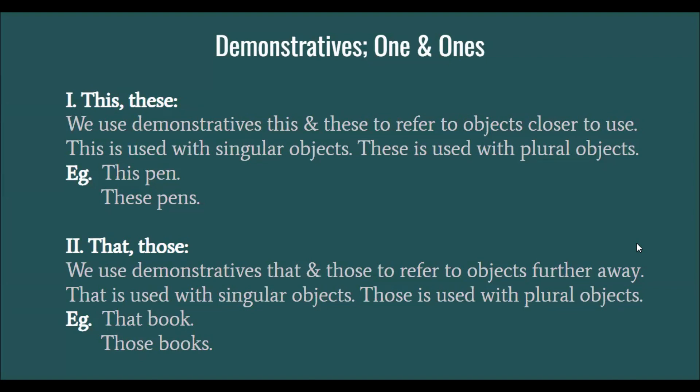When do we use 'this' and 'these'? We use them to talk about objects which are near us — closer to us. 'This' is used with singular objects and 'these' is used with plural objects. For example: this pen and these pens. I'll be adding an S because I'm talking about plural things.